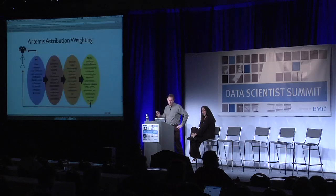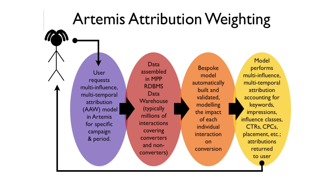This is now in use at production at Havas. The typical user lives in Artemis and makes a request for a multi-event attribution to be done. That request goes to Miro, which identifies the right data in the database, builds a bespoke model to figure out the correct attribution weighting, uses that to perform an attribution, and returns the result straight to the user who is still in Artemis. Let's take a look at Miro.